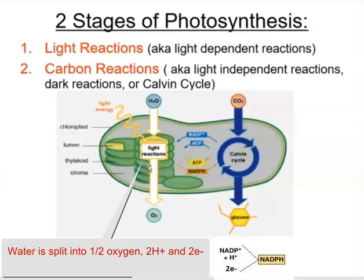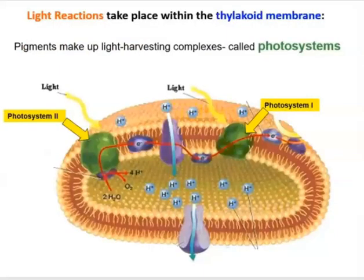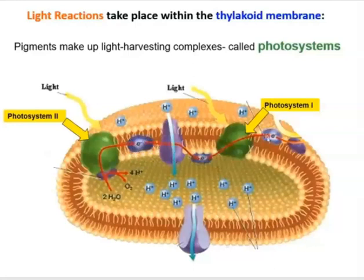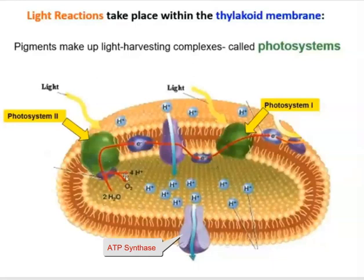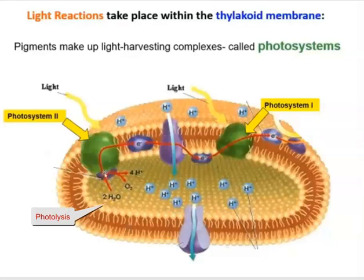Notice that NADP+ and ADP are returned to the light reactions so the process can continue as long as we have water and light. Looking at the light reactions in more detail: you have photosystem 2, photosystem 1, an electron transport chain, and ATP synthase — driven by a proton gradient and generating ATP. At photosystem 2, an enzyme facilitates photolysis of water — oxygen is released, electrons are captured, and hydrogen and electrons travel down the ETC.